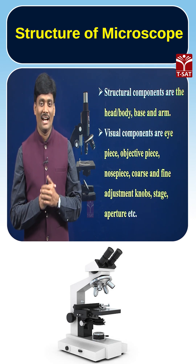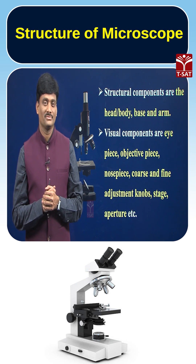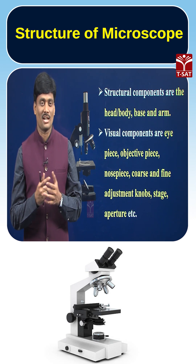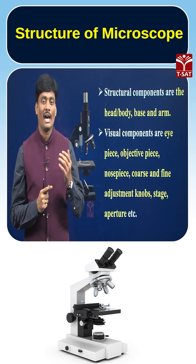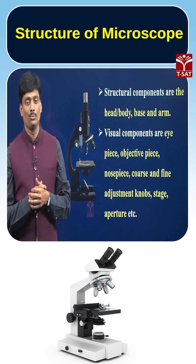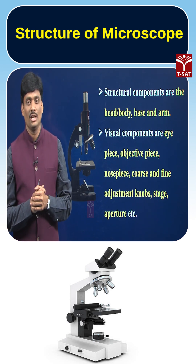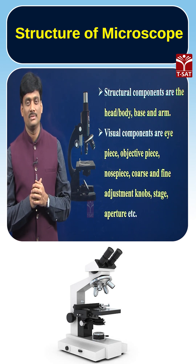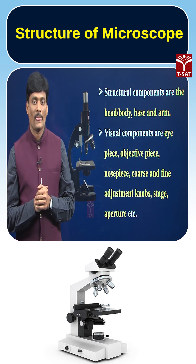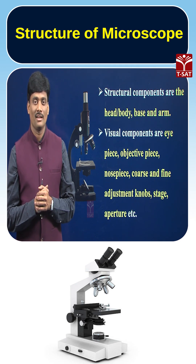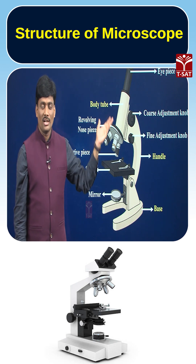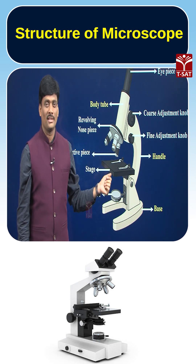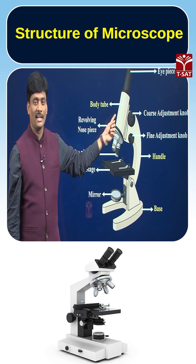The structural components include the head (body tube), the base, and the arm. The remaining structures — eyepiece, objective piece, nose piece, coarse adjustment knob, fine adjustment knob, stage, and aperture — all come under visual components.